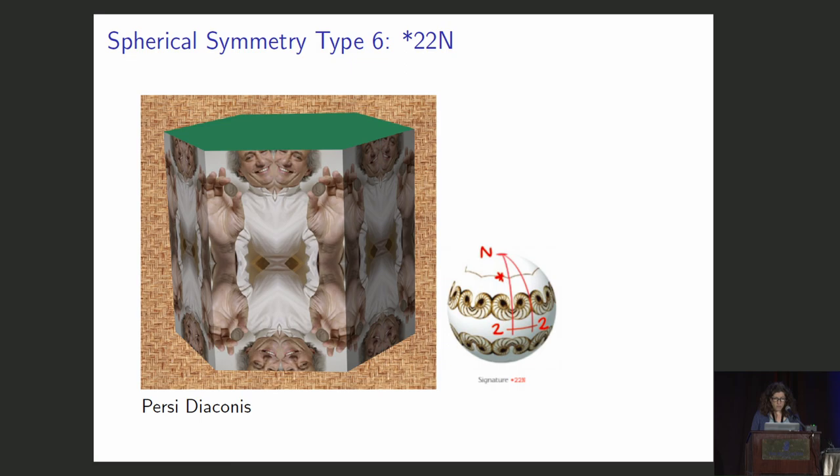We could also put an additional mirror at the equator, and we have star 2-2 N symmetry. So here N equals 6, so N mirrors at the poles and two crossing mirrors at points of the equator. This is in polyhedral form.